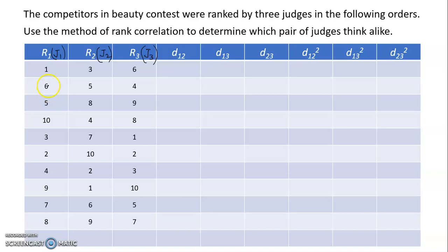Quickly repeating: for judge 1's scores across 10 participants, he declared participant number one the winner (rank 1) and participant number four last (rank 10). Judge 2 declared participant number eight the winner (rank 1), and judge 3 declared participant number five the winner. We need rank correlation to find which pair of judges thinks most similarly.